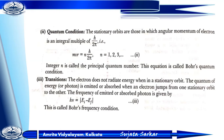Quantum condition: the stationary orbits are those in which the angular momentum of an electron is an integral multiple of h/2π — that is, mvr = nh/2π, where n = 1, 2, 3... This is called the principal quantum number, and the equation is called Bohr's quantum condition. Transition: the electron does not radiate energy when in a stationary orbit. A quantum of energy is emitted or absorbed when an electron jumps from one stationary orbit to another, and the frequency is given by hν = Eᵢ − Ef. This is called Bohr's frequency condition.